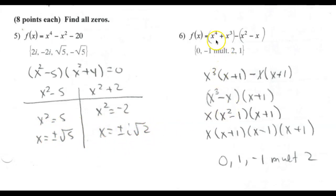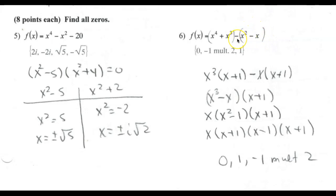This next problem has four terms, so factor by grouping. Grouping the first two and last two terms: from the first group, factor out x³, leaving (x + 1). From the second group, factor out minus x, which also leaves (x + 1). So this factors as (x³ - x)(x + 1).